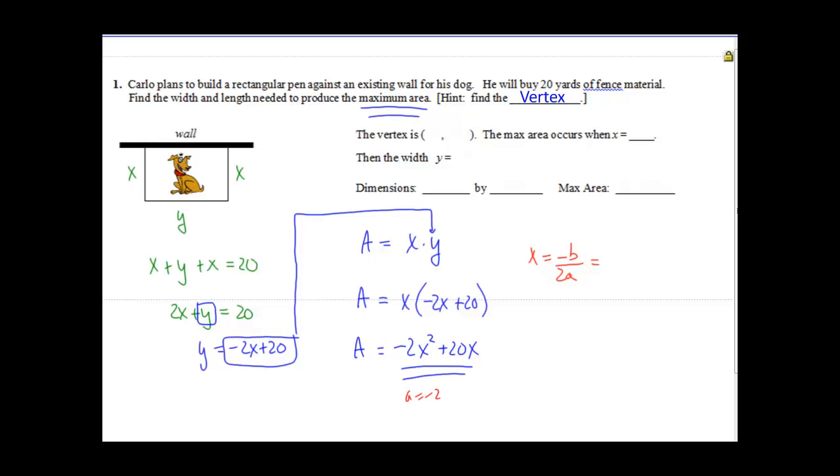The B term, if you notice, A is negative 2, B is 20, so C equals 0. So the opposite of B would be negative 20 over 2 times negative 2, so negative 20 divided by negative 4 is 5, so X equals 5.